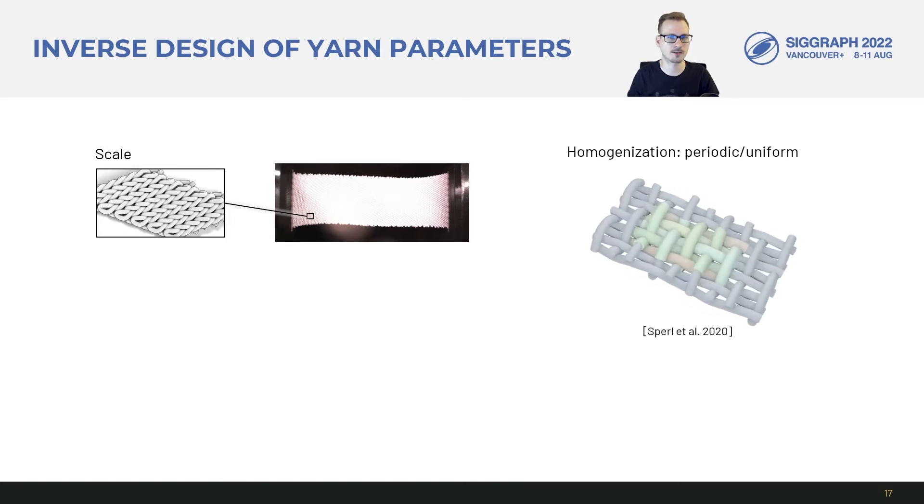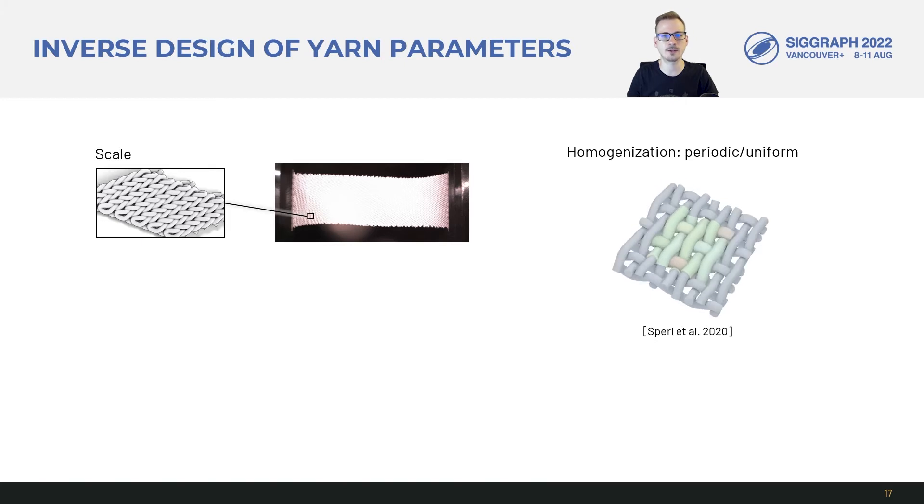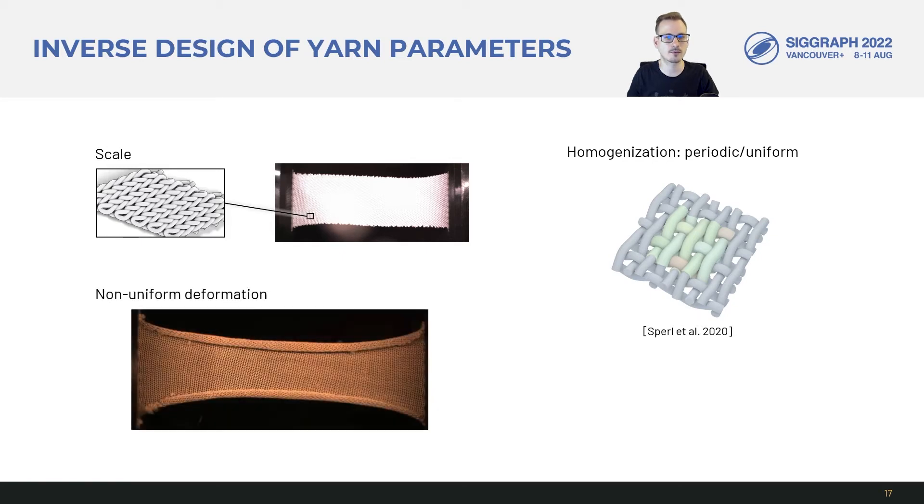The recent homogenization approaches can circumvent the scale issue by exploiting periodic simulation. In a nutshell, uniform strains are applied to geometry via periodic boundary conditions, and we can compute an average energy or stress to represent the large-scale behavior. But these approaches are limited to uniform deformation. While we find that stretch fabric often exhibits substantially non-uniform deformation, such as shearing near the clamps or curling at the boundary.